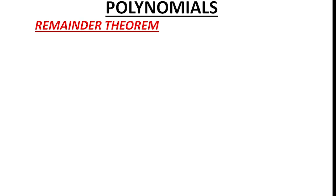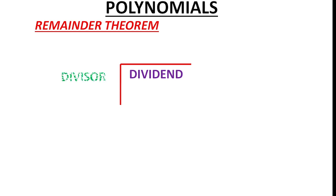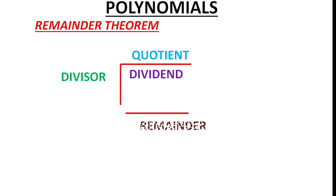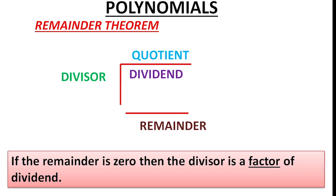Hi students. From my previous video, you have learned how to divide a polynomial by another polynomial. After long division, we get the quotient and remainder. If the remainder is 0, then the divisor is a factor of the dividend. Today, I am going to explain how to find the remainder without doing long division. That is the remainder theorem.